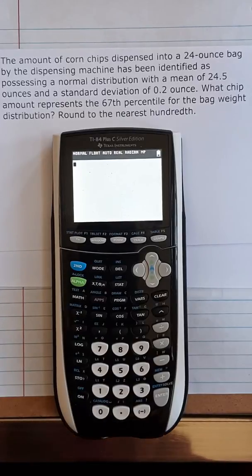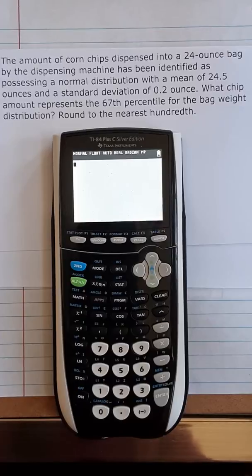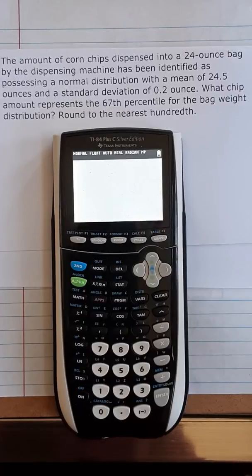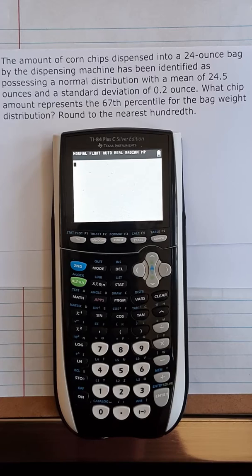Let's try to solve this problem using the calculator. The amount of corn chips dispensed into a 24-ounce bag by the dispensing machine has been identified as possessing normal distribution.